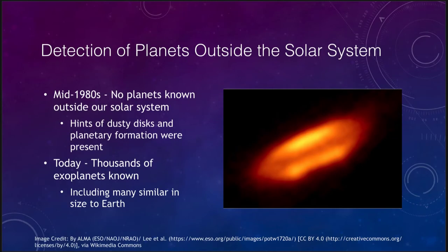And we want to start looking at first detection. How can we find these planets outside our solar system? As early as the mid-1980s, no planets were known outside of our solar system. We only knew of those in our solar system.